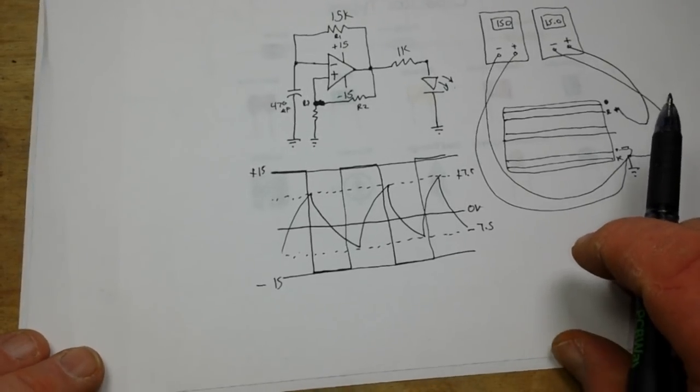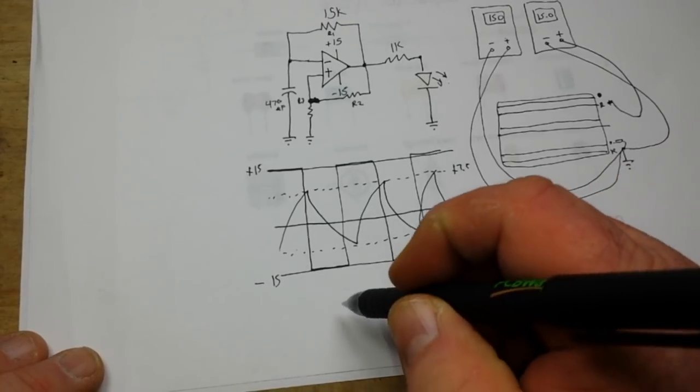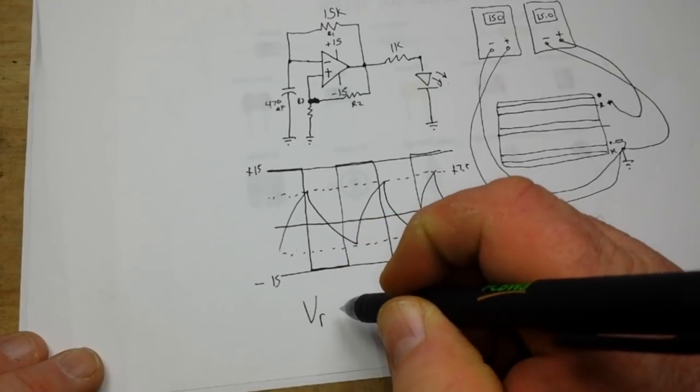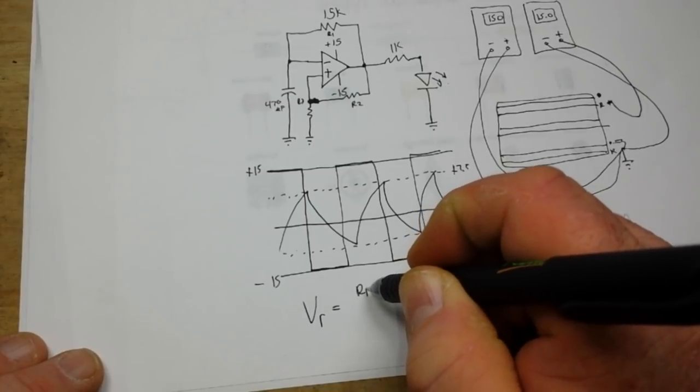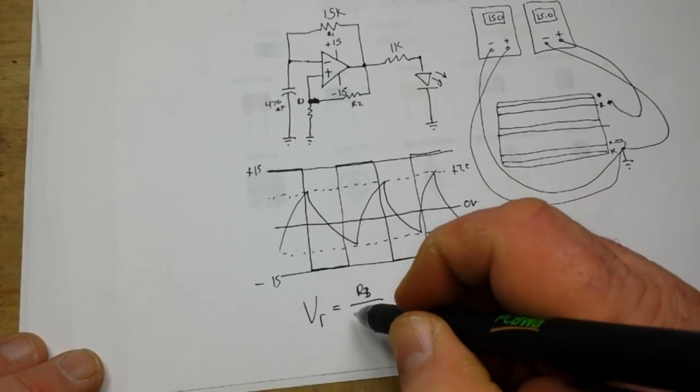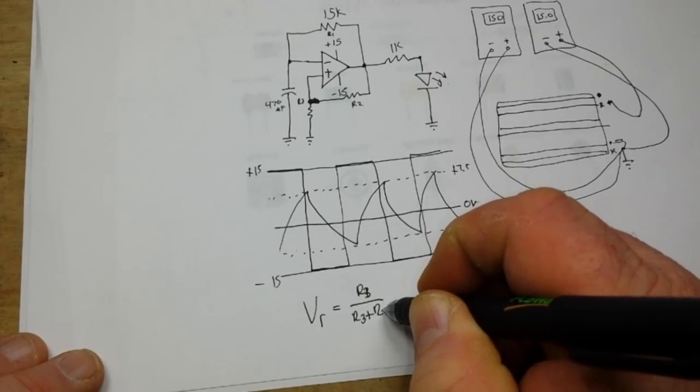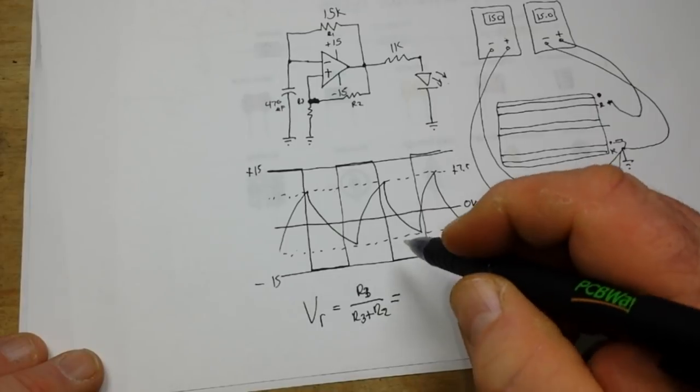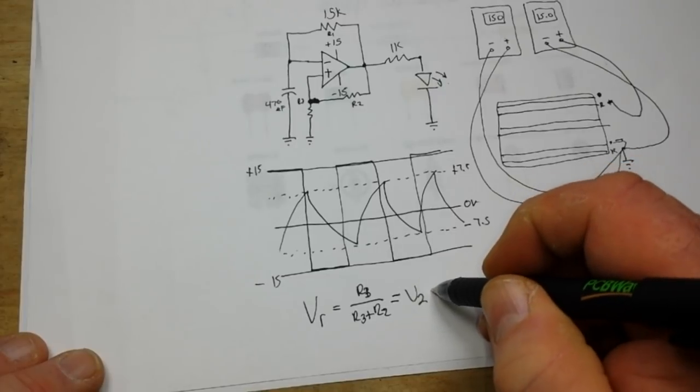Now to find our threshold voltage, it's not that hard to figure out since we're using two equal resistors that it's half of them, but the formula is actually going to be this: our VR is equal to R3 over R3 plus R2 and is equal to V2.